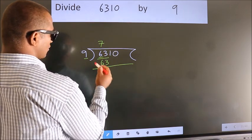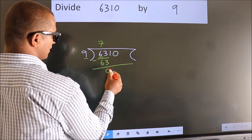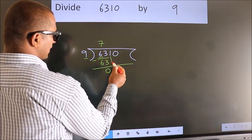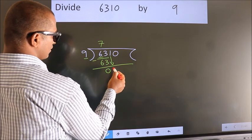Now we should subtract. We get 0. After this, bring down the beside number. So 1 down.